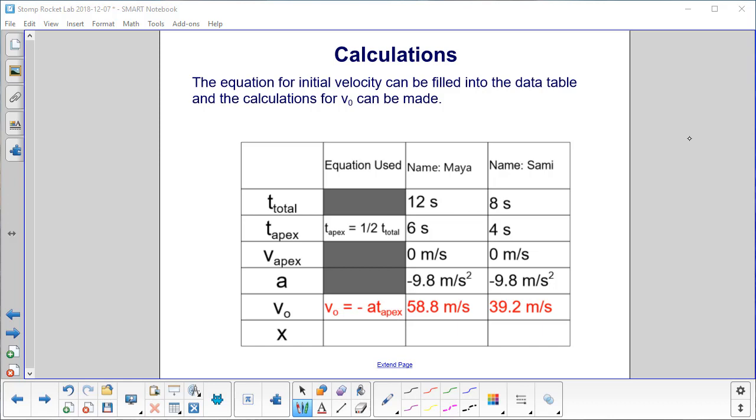We can now fill in another row in our data table, the v0. The equation we use is v0 equals minus a times t_apex. And where's t_apex? That's this row. We multiply it by this row and take the negative because it's negative times at apex. And we have negative six times a negative 9.8 is 58.8 meters per second for the rocket shot by Maya. And the other rocket is 39.2 meters per second.